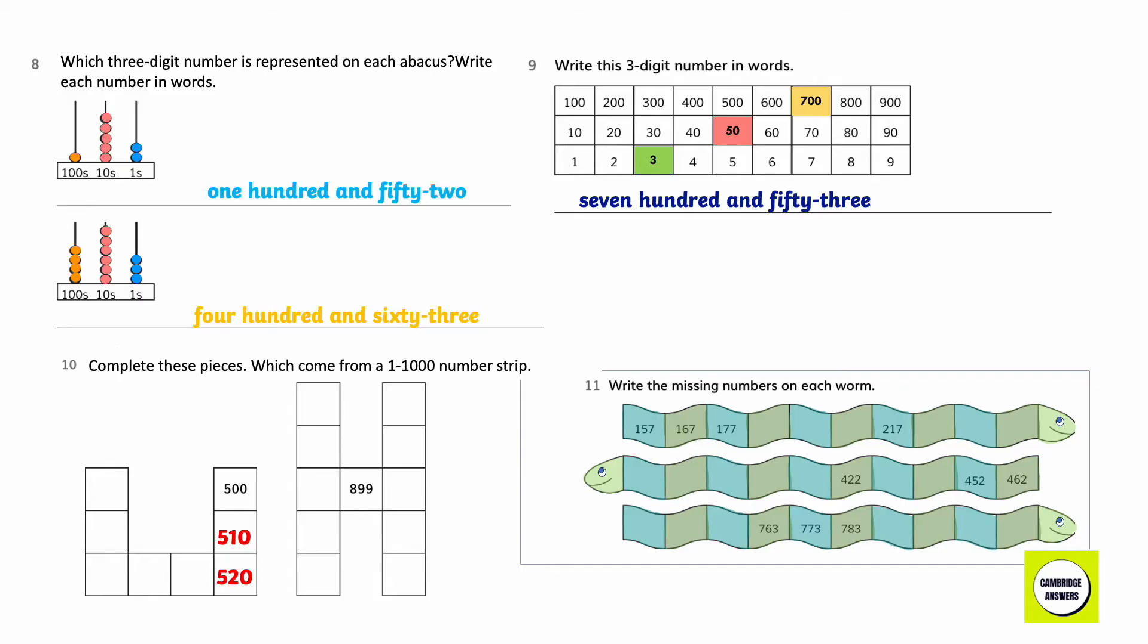Complete these pieces which come from a 1 to 1000 number strip. 510, 520, 519, 518, 517, 507, 497. 900, 890, 880, 910, 920.